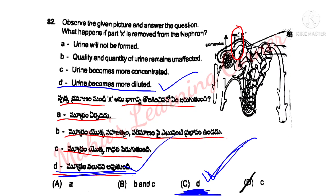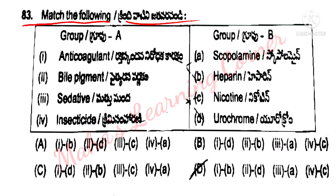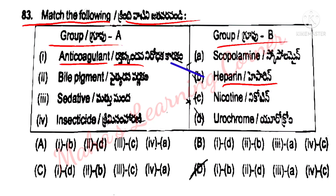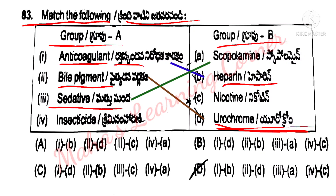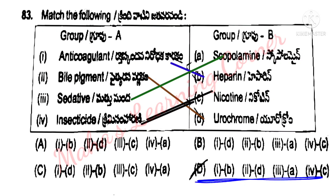Next, match the following. Krindi vatini jathaparachanddi. Group A, Group B — jathaparachali. Anti-coagulant: raktoskandana nirothak khaarakam — heparin. Bile pigment: pitherasa varannakam — eurochrome. Scopolamin — insecticide, krimisamaharini — nicotine. Option D is the correct answer.